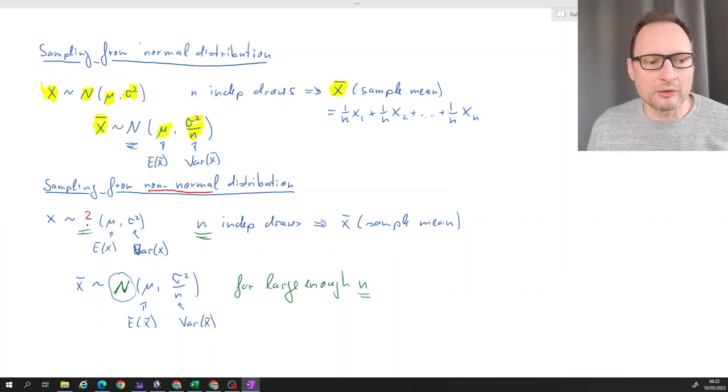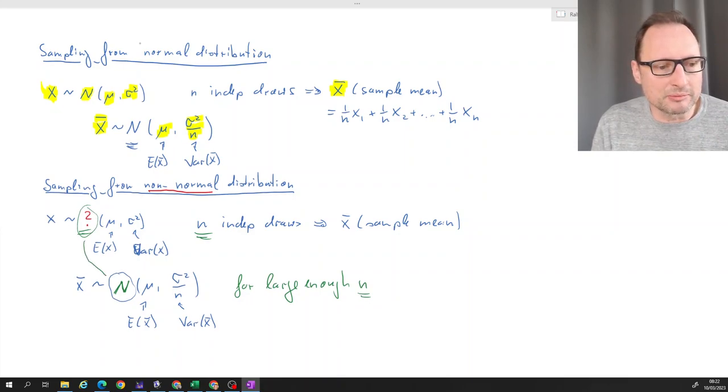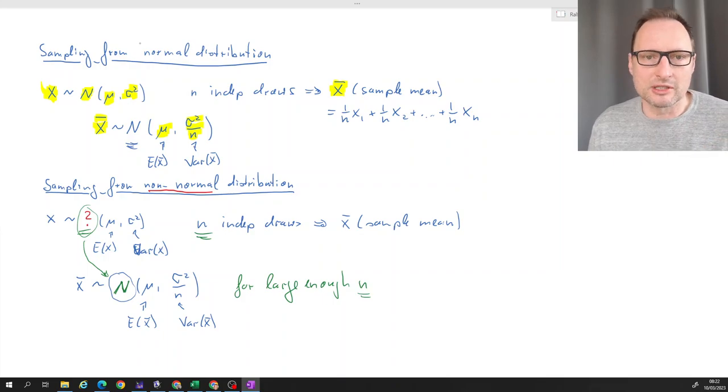This is an incredibly powerful result and perhaps a somewhat surprising result. How should it be that whatever distribution X is, the sample mean is still normally distributed? It's an incredibly powerful result which is used a lot in statistics and econometrics.